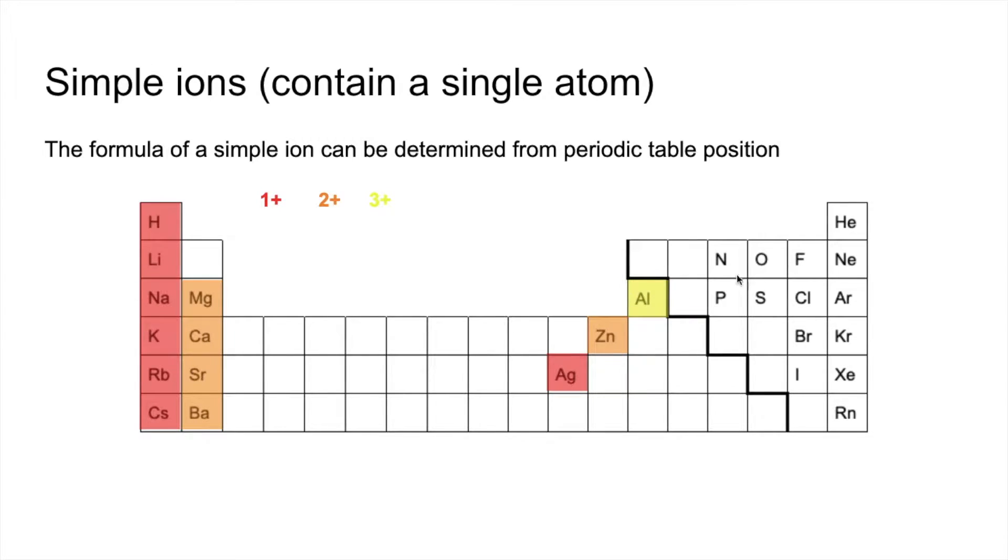So moving on to the non-metals. We've got the noble gases, group seven. They don't form ions. So they have a full outer shell and therefore don't need to lose or gain any electrons.